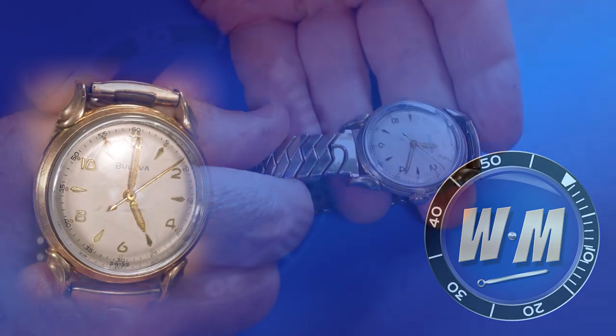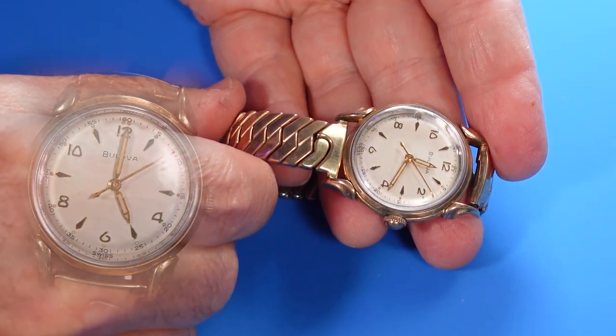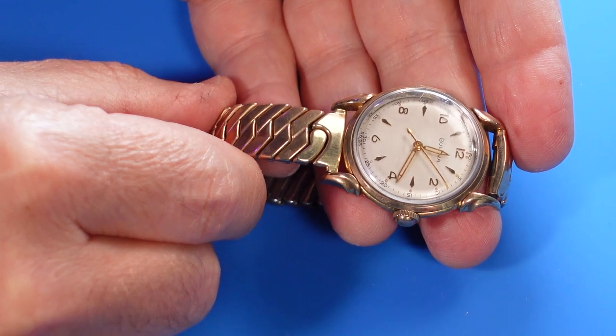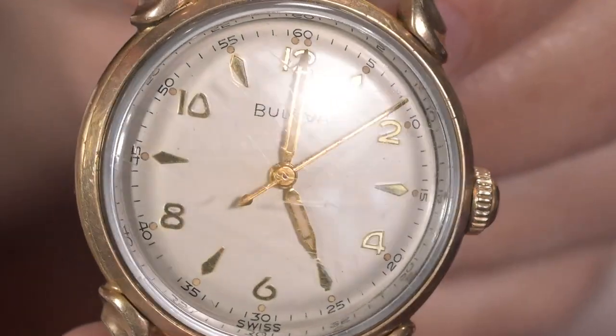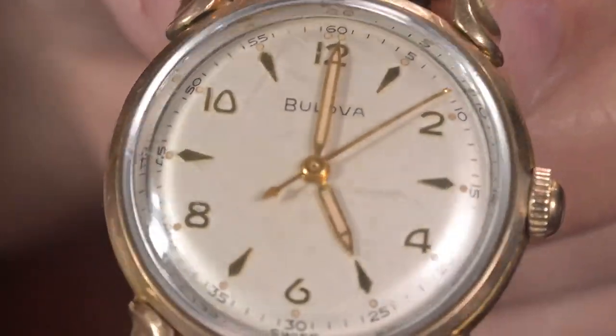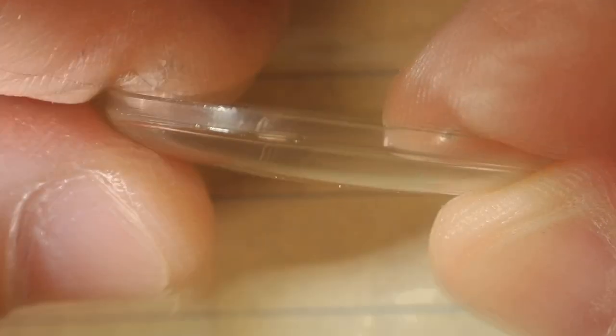I'm restoring my father's 1953 Bulova Commodore wristwatch, and I'd like to restore the original crystal if I can. The watch has many nicks and scratches, and a few marks that I would call gouges, but it is not cracked and the edges are in good shape.